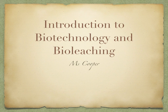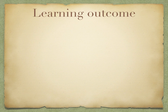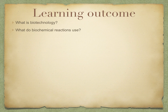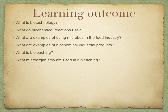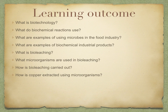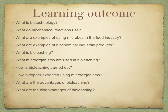In this topic, we're going to look at the introduction to biotechnology, and then we're going to discuss bioleaching. By the end of this topic, you should be able to answer: What is biotechnology? What do biochemical reactions use? What are examples of using microbes in the food industry? What are examples of biochemical industrial products? What is bioleaching? What microorganisms are used in bioleaching? How is bioleaching carried out? We're going to look at the example of how copper is extracted using microorganisms, and finally, what are the advantages and disadvantages of bioleaching, and what are the different bioleaching techniques?